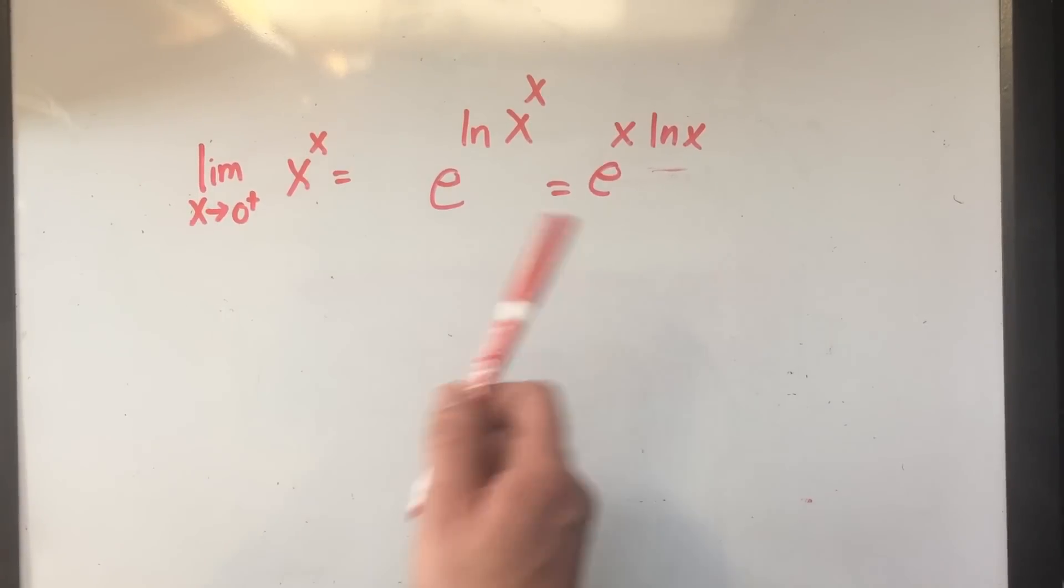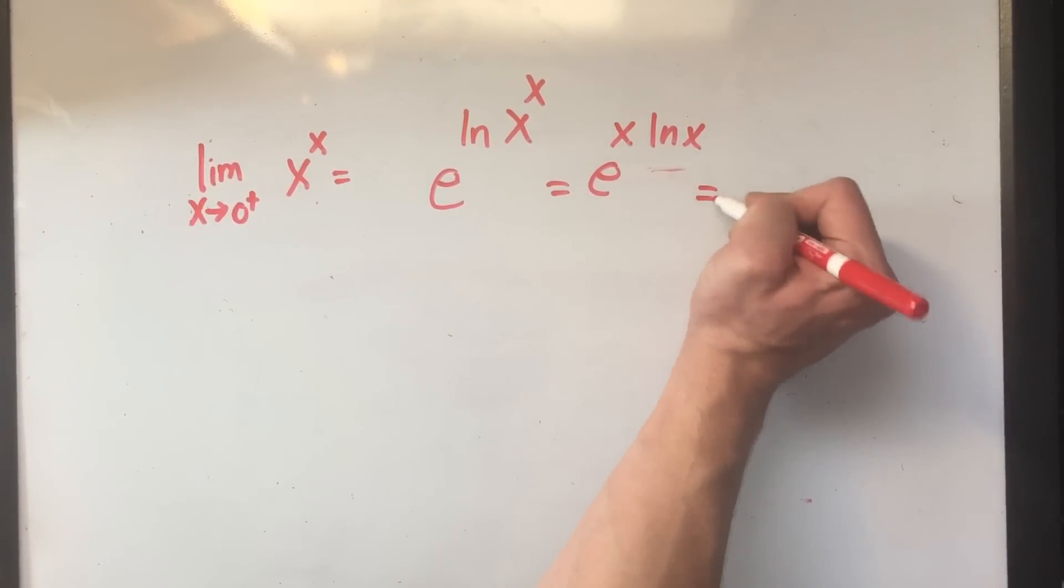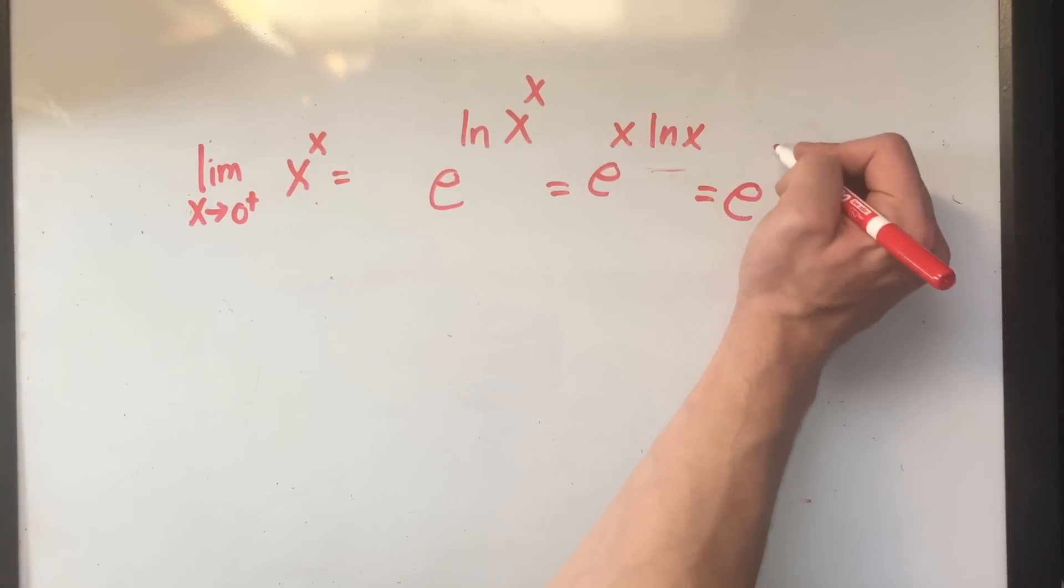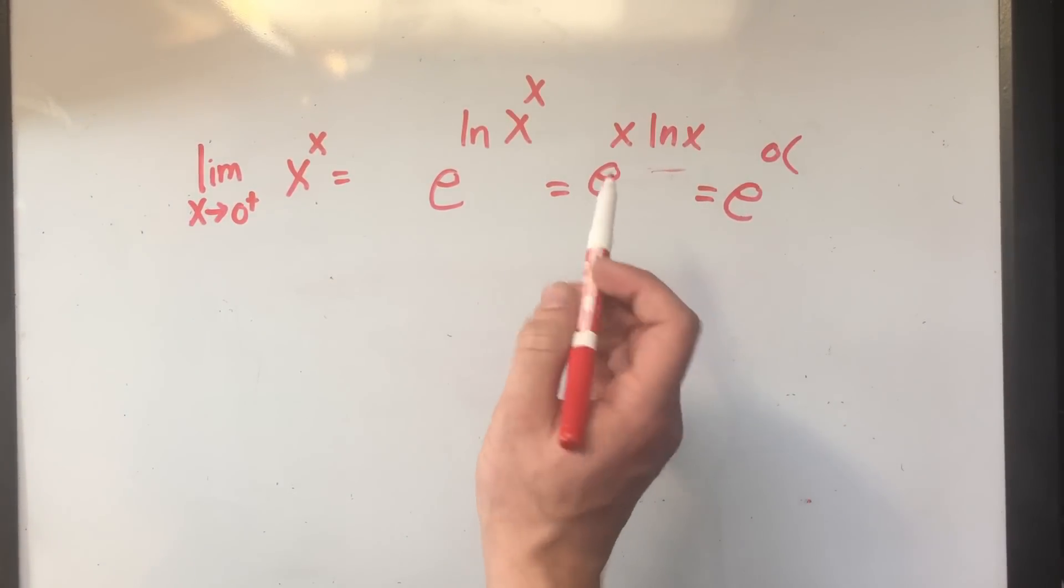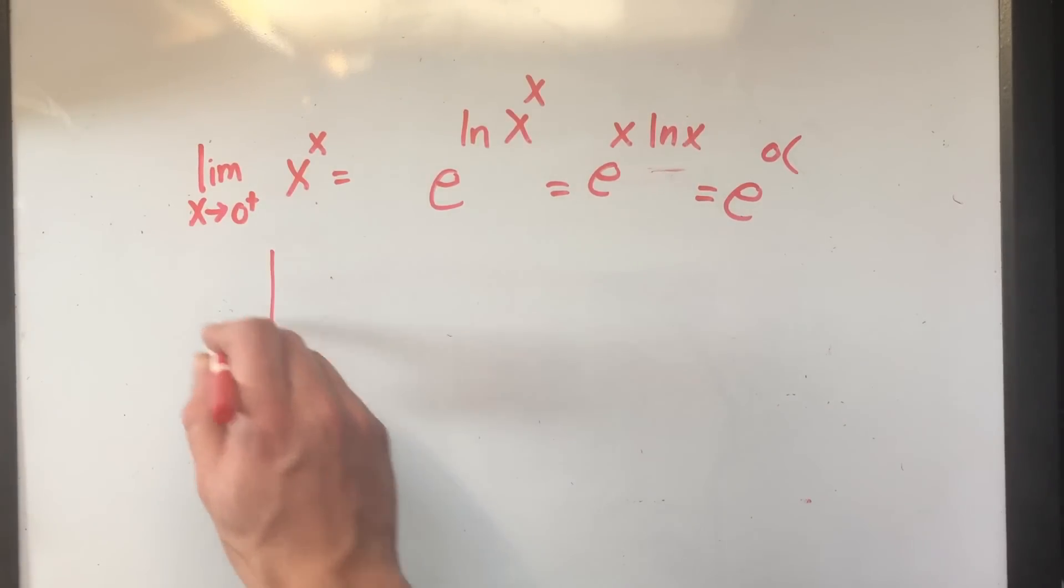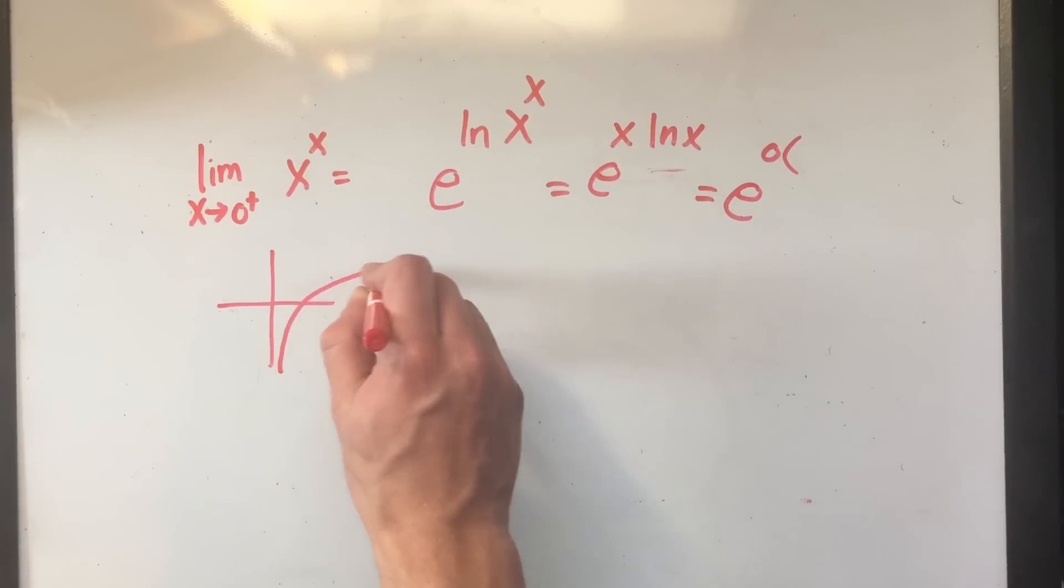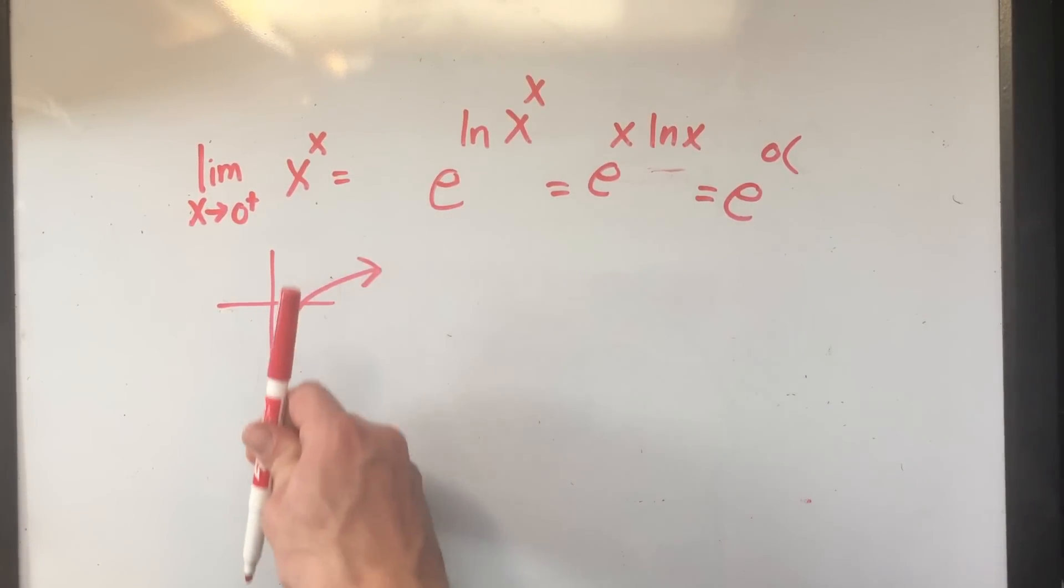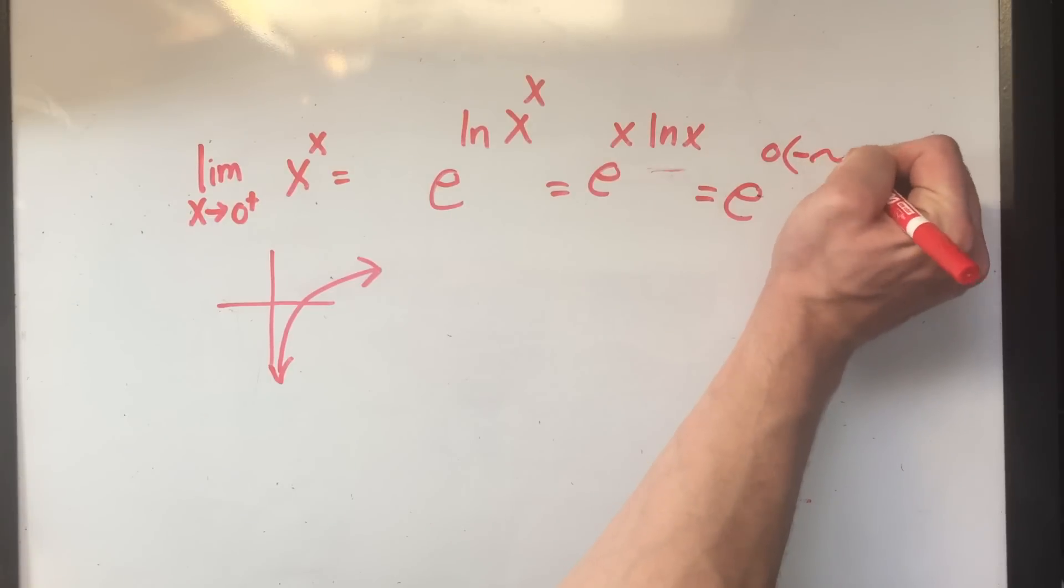Now, what happens if I plug in zero now? If I take the limit as x goes to zero from the right, well, that would be a zero for x. And what happens if you take the natural log as x goes to zero? Well, the natural logarithm looks like this. So if I approach zero from the right, this is going down to negative infinity.